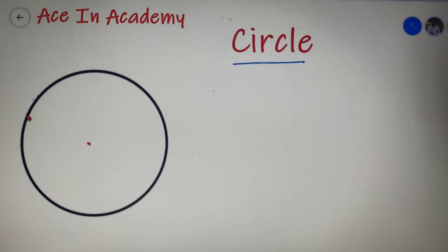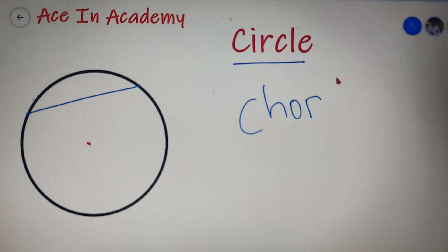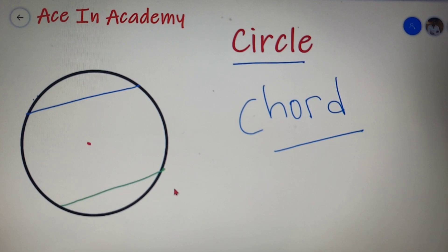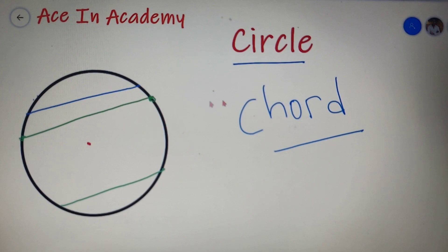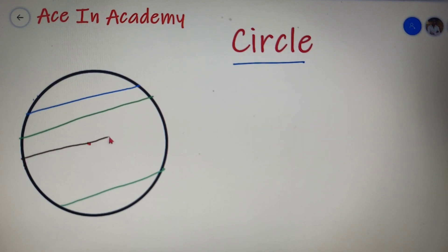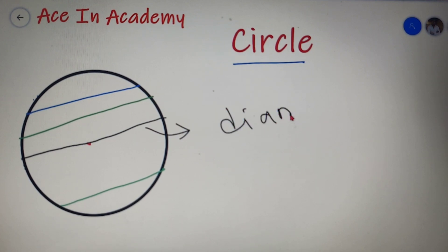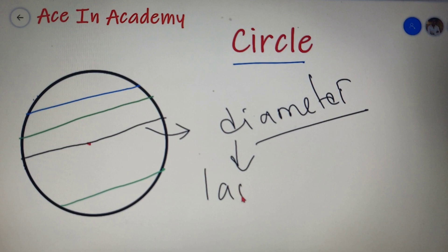The straight line that connects two different points lying on the boundary of the circle is called as the chord of the circle. If I draw another straight line joining two different points, then this line will also be called as a chord of the circle. A circle may have an infinite number of chords — the only restriction is that it should be a straight line joining two different points on the boundary. The chord passing through the center is the largest chord of the circle, and it is called as the diameter of the circle.